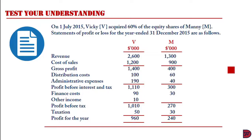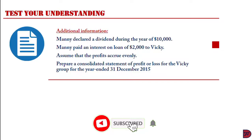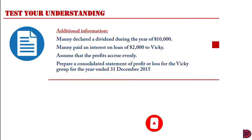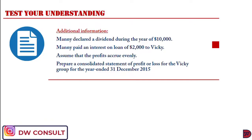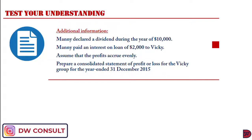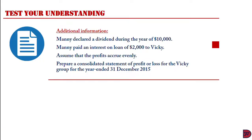We have revenue, cost of sales, gross profit, distribution costs, and administrative expenses leading to profit before interest and tax. We then bring finance costs, other income, profit before tax, taxation, and profit for the year. Money declared a dividend during the year of $10,000, so the portion belonging to the parent has to be eliminated. Money also paid interest on a loan of $2,000 to Viki — intra-group interest has to be eliminated. We assume that profits accrue evenly.